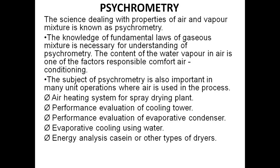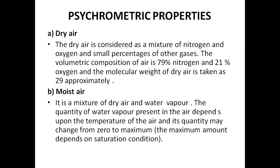Going through the psychrometry part quickly — what are the properties and terms we have? First is dry air, which is air devoid of any water vapor. Volumetrically it is composed of 79% nitrogen and 21% oxygen. The molecular weight of dry air is taken as approximately 29, which is the weighted average of nitrogen, oxygen, and other gases present.